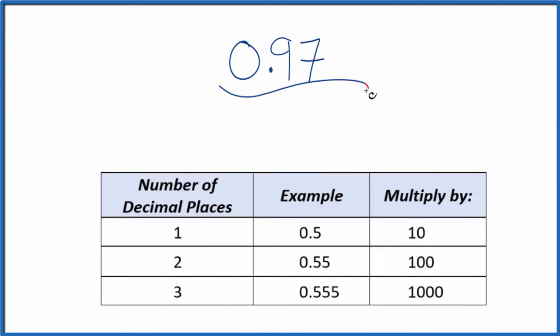If you're asked to convert the decimal 0.97 to a fraction, here's how you do it. What we want to do first is we want to make it 0.97 over 1. It's still equal to 0.97, we're just dividing by 1, but now we have the start of a fraction.